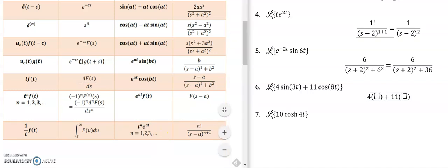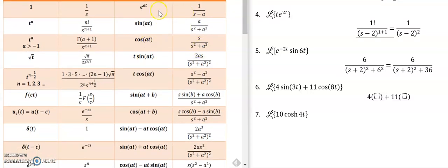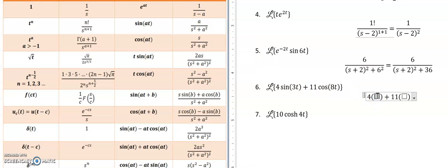So if we go back to our table, we're going to find our regular trig functions. They're up here. So for the sine function, the coefficient of the t inside the sine becomes our constant here and here. And so we're going to end up with 3 for the sine over s squared plus 3 squared, which is 9.